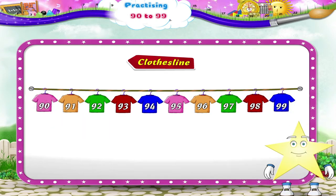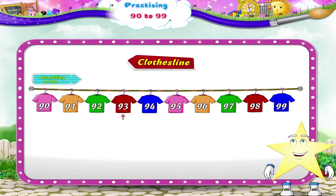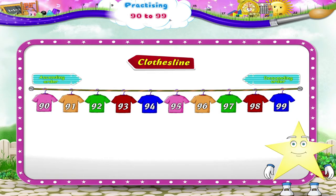The numbers that follow 90 on the clothesline are 91, 92, 93, 94, 95, 96, 97, 98, and 99.